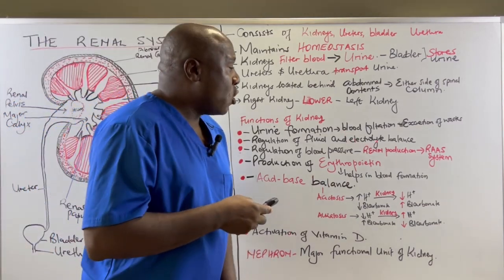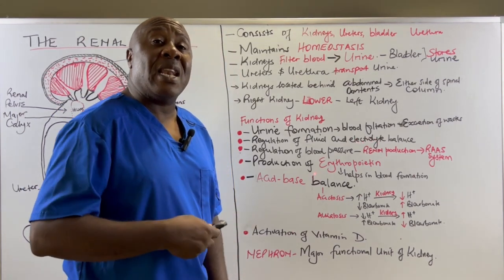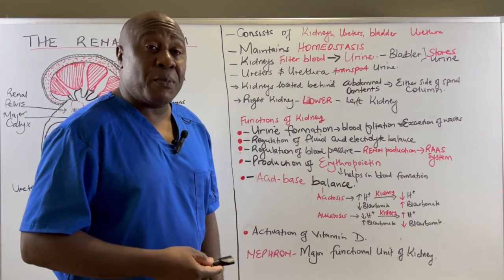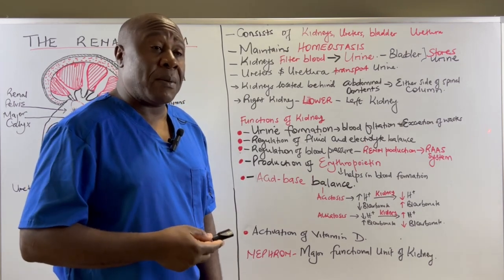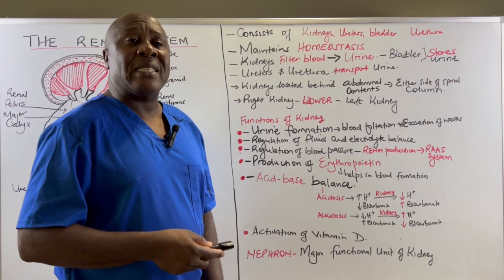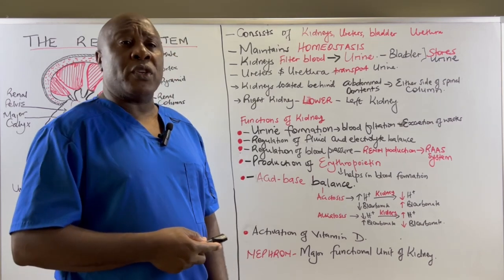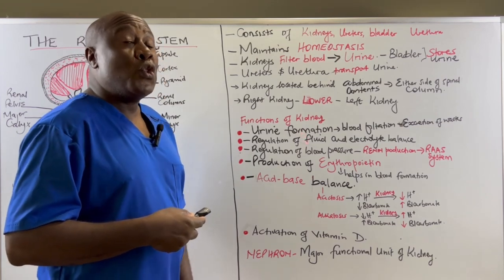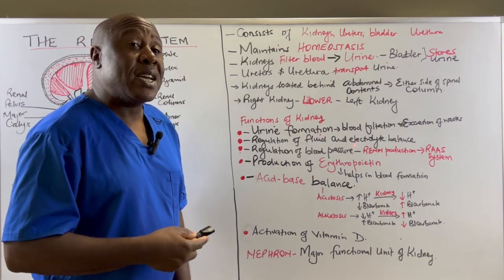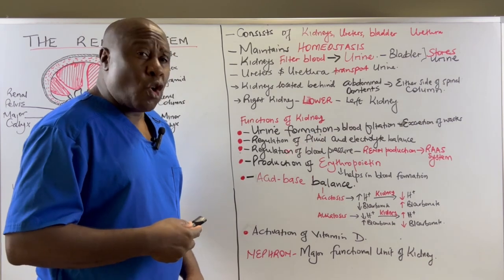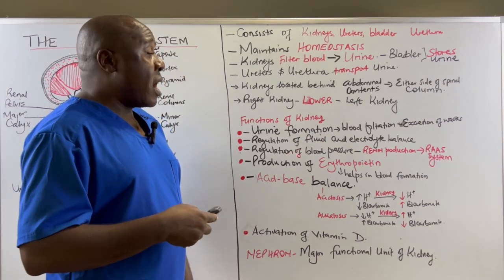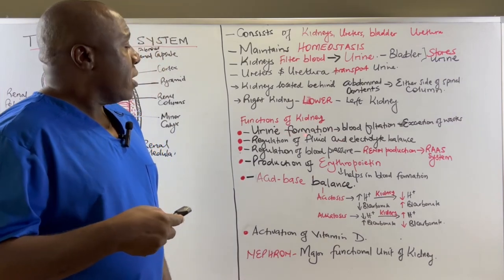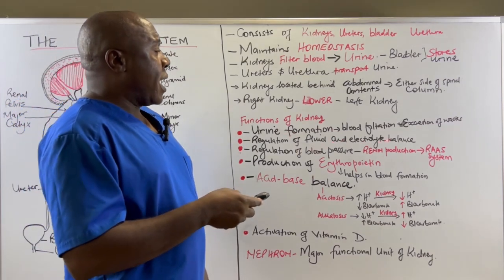Kidneys also play a role in electrolyte balancing. We need a balance in the electrolyte concentration in our bodies. For example, we need a balance in potassium — when there is excess potassium, the kidneys clear it out; when there is less potassium, the kidneys hold on to fluid. If we have less fluid in our bodies, people are not urinating because the kidneys are holding on to that little fluid to maintain homeostasis.